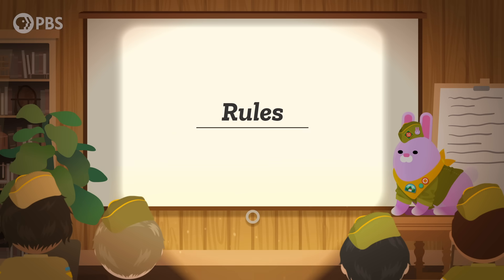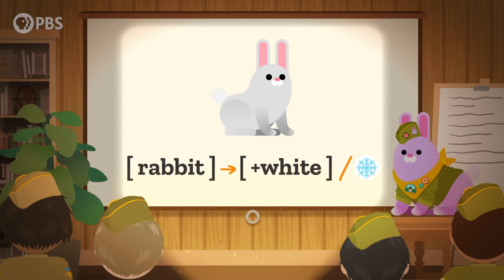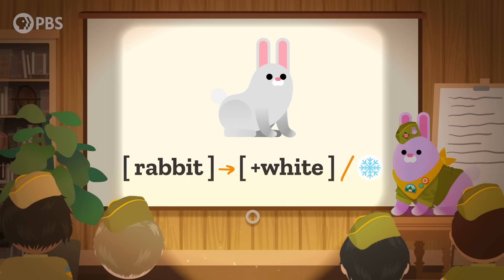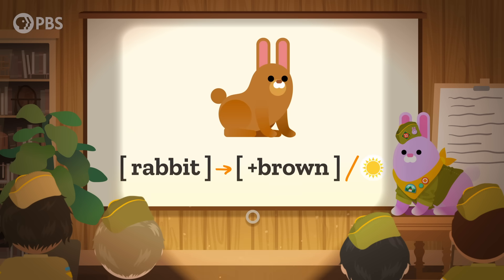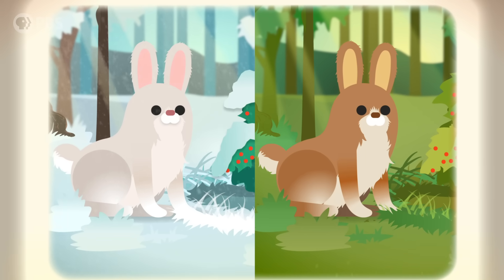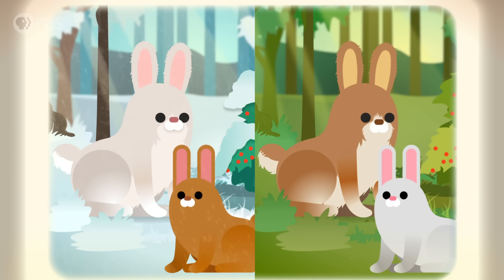And the third is the environment where that change happens — whether it's winter. From this, you have two rules: the first describes how the rabbit changes to white when it's winter, and the second describes how it changes to brown when it's not winter. We can make observations like this about sounds in a language to determine whether we're dealing with a phoneme with two allophones, like a color-changing rabbit, or two different phonemes, like two differently colored rabbits. Thanks, Thought Bubble!